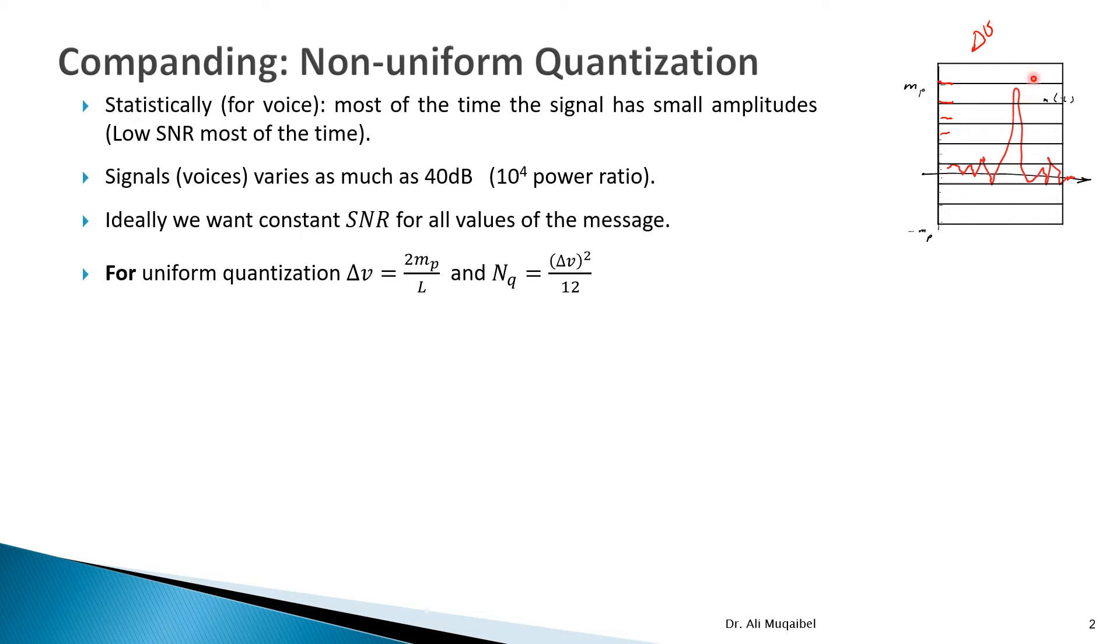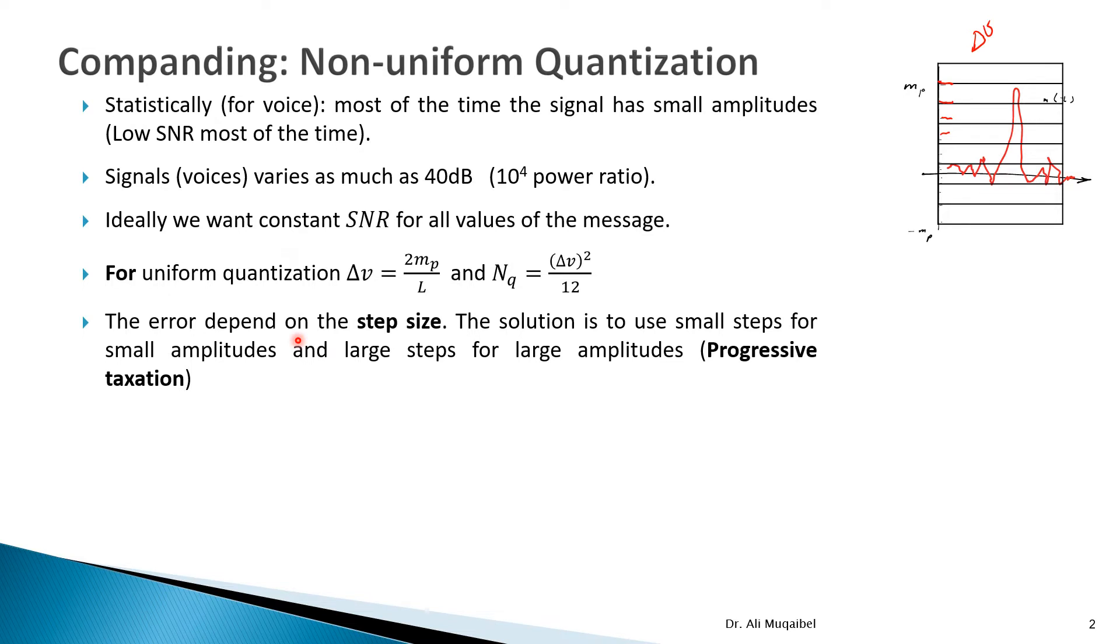So this is the diagram that shows you the uniform quantization, where we have delta nu is constant for all values. And the non-uniform quantization suggests that the error depends on the step size, which is delta V. So the solution is to make small steps here, because we want small steps for most of the time, and then we use large steps for large amplitudes. This is like progressive tax sessions. In countries with income tax, they have larger amount of tax for people with high income and smaller amount of tax for people with lower income. This is why we call it progressive taxation. The amount of error delta nu depends on the amplitude.